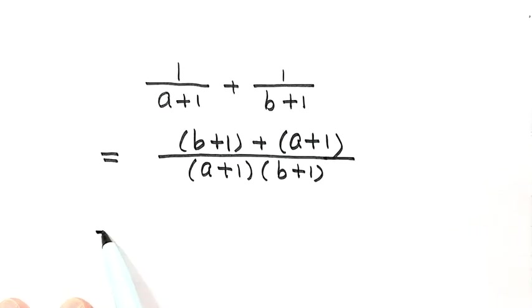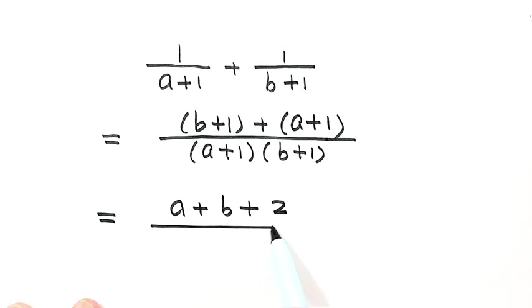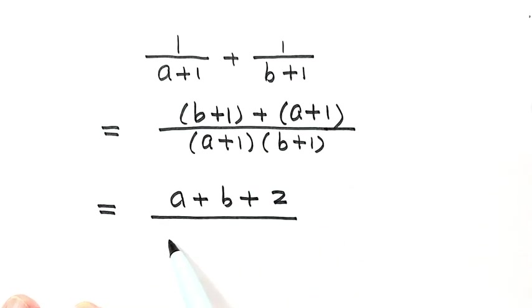Let's simplify the numerator. So a plus b plus 2. Let's expand the denominator. So here just a times b plus a plus b plus 1. It seems we cannot go further right now. So now let's look at the two given conditions.